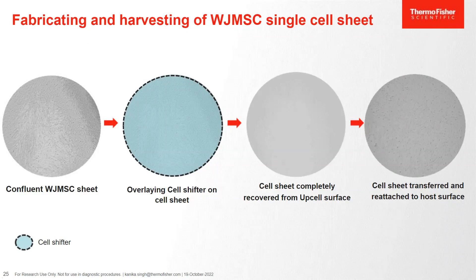To show how to fabricate and harvest cell sheets using UpCell surface, the data shown here is from WJ MSCs. We first seeded WJ MSCs on the UpCell surface and grew them until they reached a certain confluency level. Then we kept the sheet at room temperature for them to dissociate from the surface automatically. We then overlaid the cell shifter on top, and as you can see in the third picture, all the cells got attached to the cell shifter and nothing was left at the bottom. These cells were then transferred to the host surface where they got attached because of the ECM proteins which remained intact.